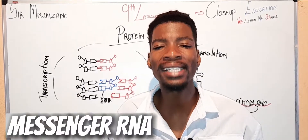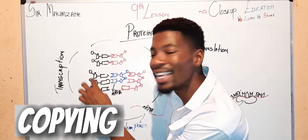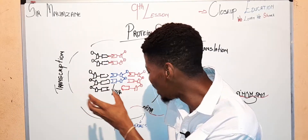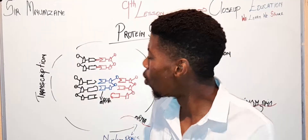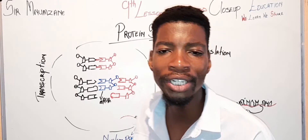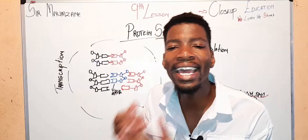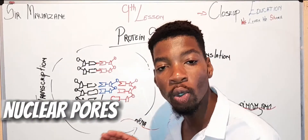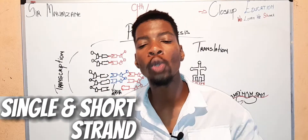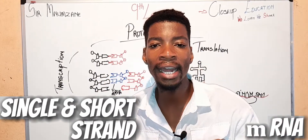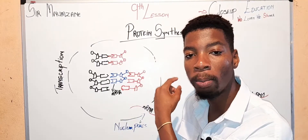It will act as a template to create a strand which we call mRNA. This strand is called the messenger RNA, which is responsible for taking that information out of the DNA into the cytoplasm. You might ask yourself: why doesn't the DNA just take the information on its own out into the cytoplasm? Because the DNA is too big to exit through the nuclear pore, so it has to create a single strand — the mRNA.